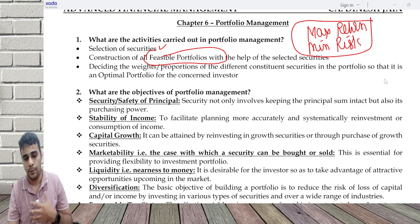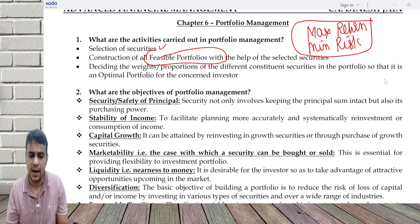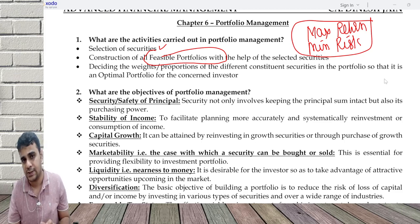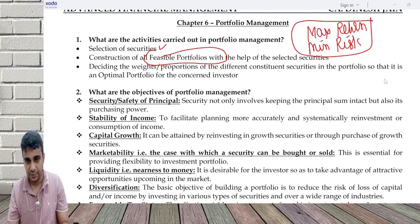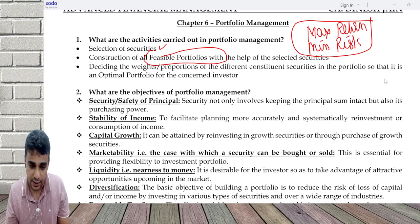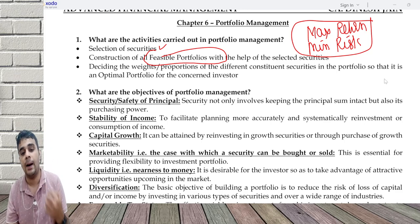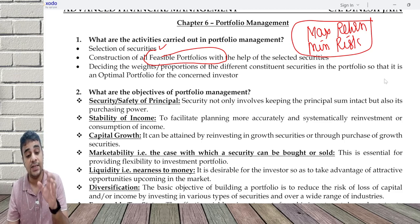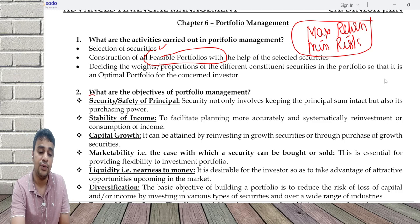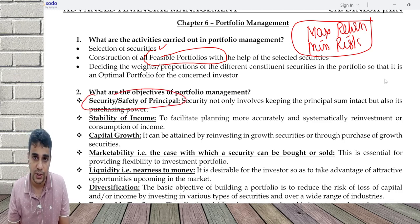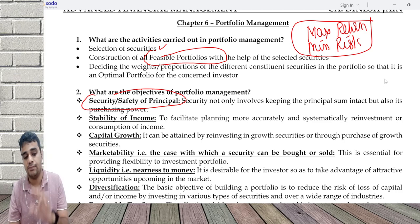Next, what are the objectives of portfolio management? Whenever I'm trying to create a portfolio, there can be multiple objectives. The material talks about the primary factors we need to consider. The first and foremost is security or safety of principal. It is important to have return of my capital rather than return on capital. Return on capital is earning something on the money invested, but what is very critical is that at least my capital comes back. So at least I want to ensure that my principal value adjusted for inflation comes back.